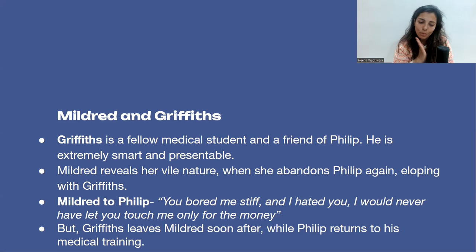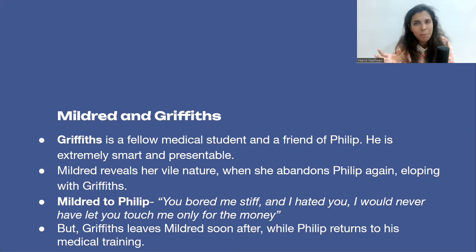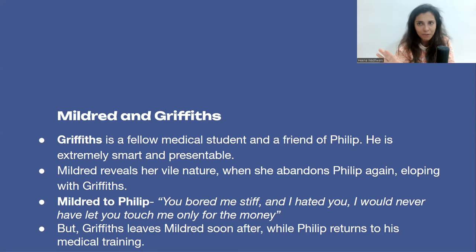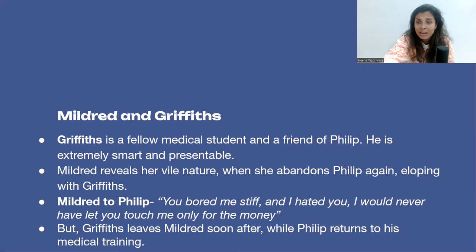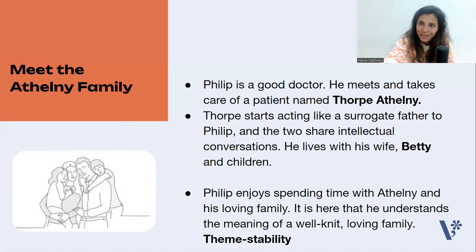There is a moment in the novel when Mildred shows her hatred towards Philip openly. She says: 'You bored me stiff and I hated you. I would never have let you touch me only for the money.' After this, Griffiths, having had all the fun with Mildred, also leaves her — telling her he's bored. Meanwhile, Philip returns to his medical training and career. He tries to become a good doctor and in the novel is shown to be very good with patients — treating them as equals, talking to them warmly. He meets a patient named Thorpe Athelny.